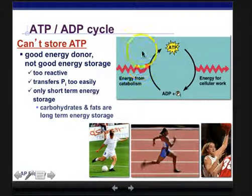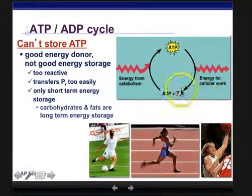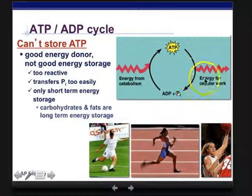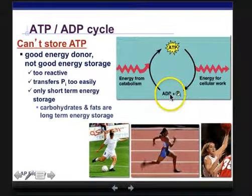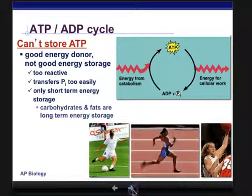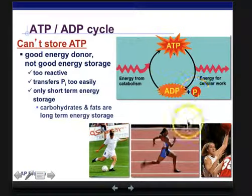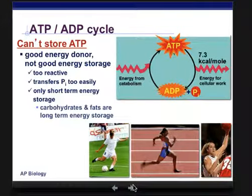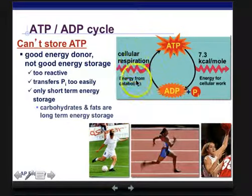This diagram shows energy coming into this cycle from catabolism. We have ATP, and then we use that energy for cellular work, ending up with ADP and a free phosphate group. Then we pull energy in, in the form of a phosphate, to have ATP again. We ditch that phosphate at the first opportunity, ending up with ADP and a phosphate. There's that 7.3 kilocalories per mole, and this is the ATP we're getting from cellular respiration.